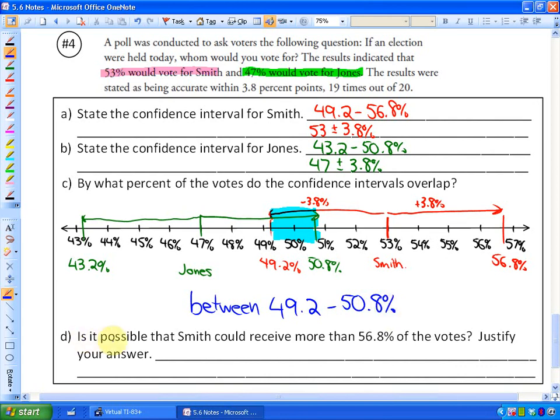So here's my last question. Is it possible that Smith could receive more than 56.8% of the votes? So Smith, it says that the upper part of his range here, or his confidence interval, is 56.8%. So is it likely he's going to get more than that? Well, the answer is no. And it says, justify your answer. Well, we can see here that we're confident of these results 19 times out of 20. So our confidence level is high, or in other words, it is 95%. We're 95% sure that he will not receive above 56.8% of the votes.